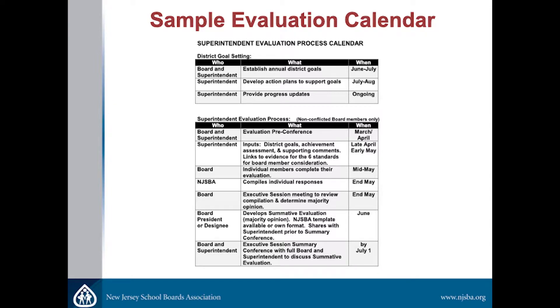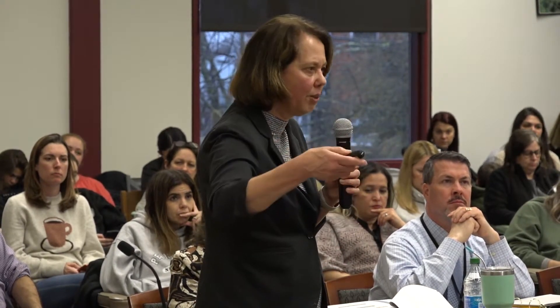The suggestion I typically give to boards is to take that July 1st date and work backwards so that ideally you don't need to add any additional meetings. If we know we have to be done by July 1st, we would take your last June meeting and consider that to be the sit-down meeting with the superintendent, then work backwards from there — what step do we need to get done at the previous meeting — and try to minimize the addition of any extra meetings into the process.